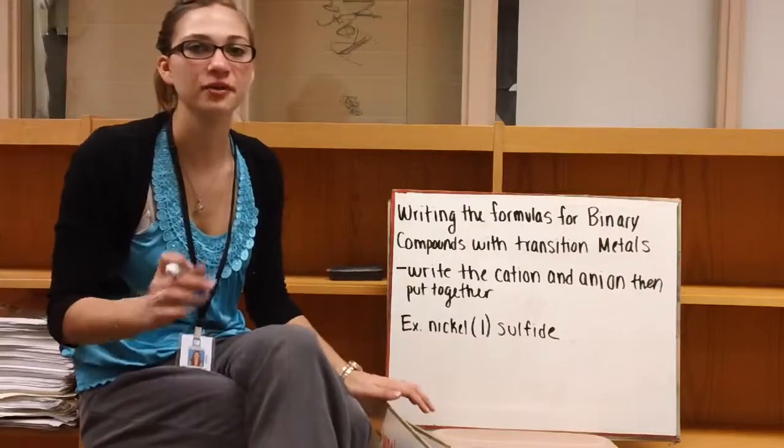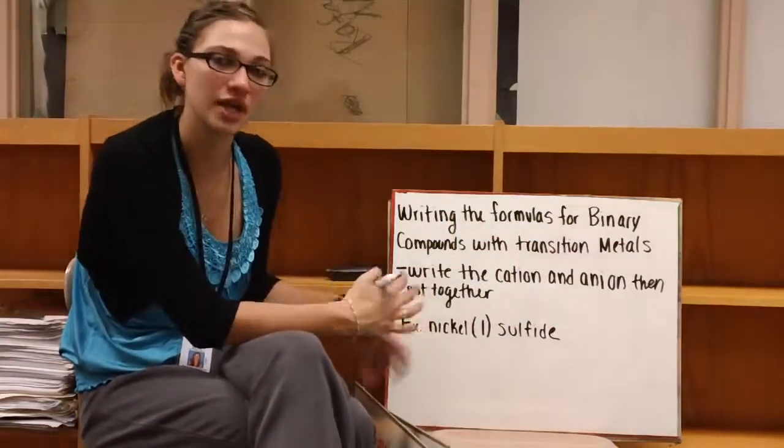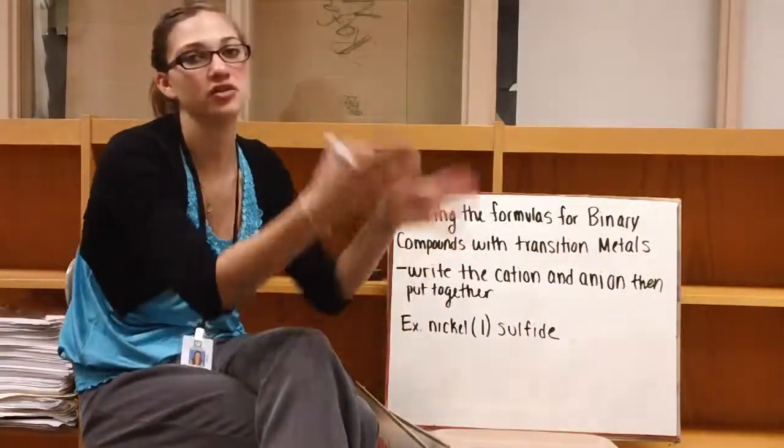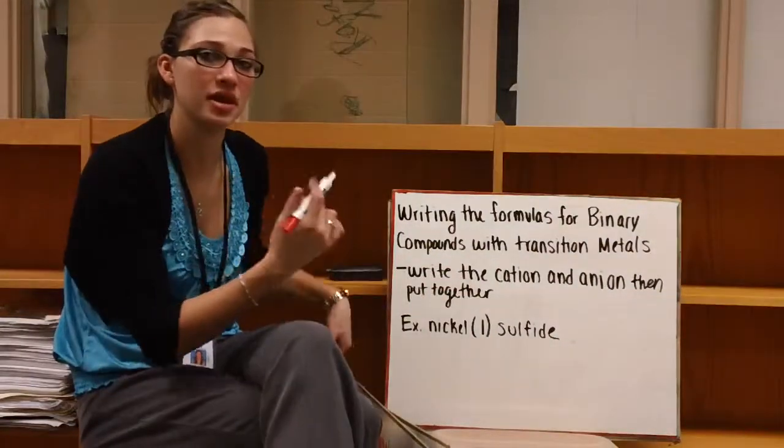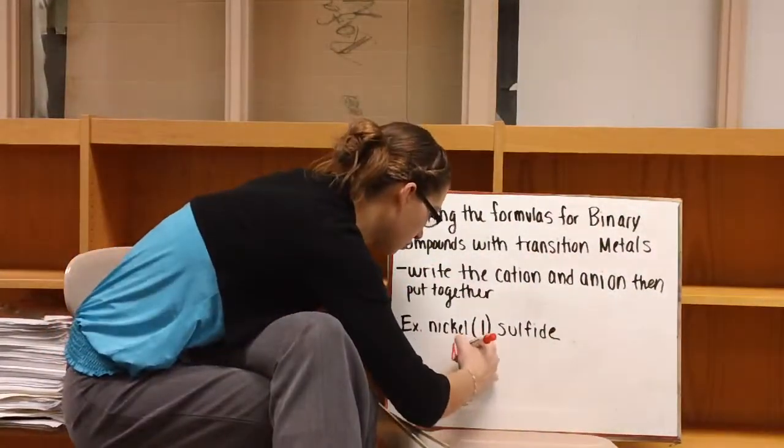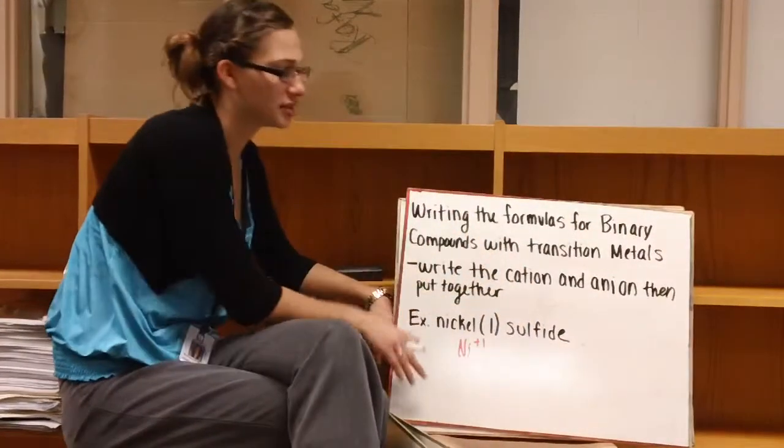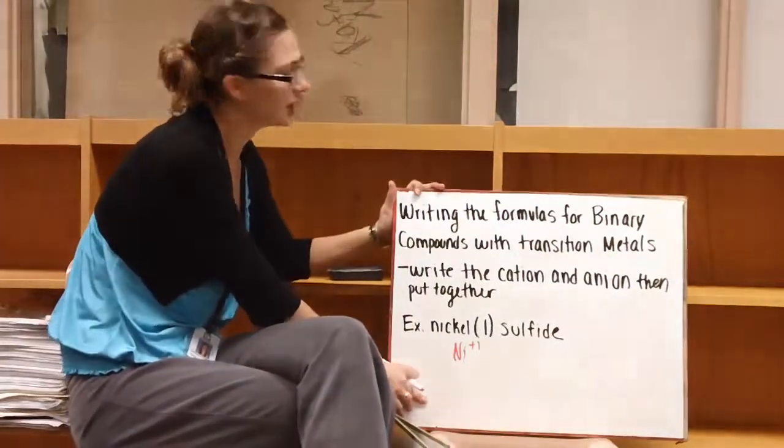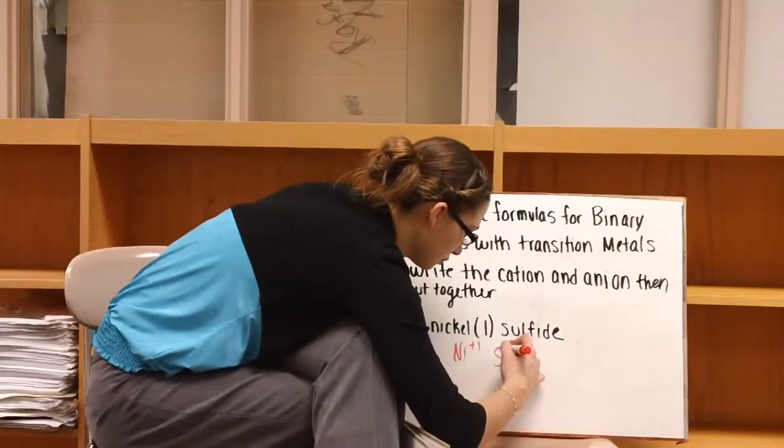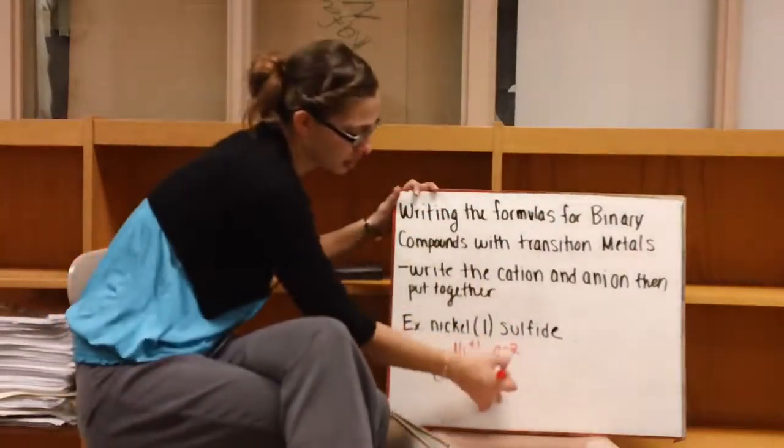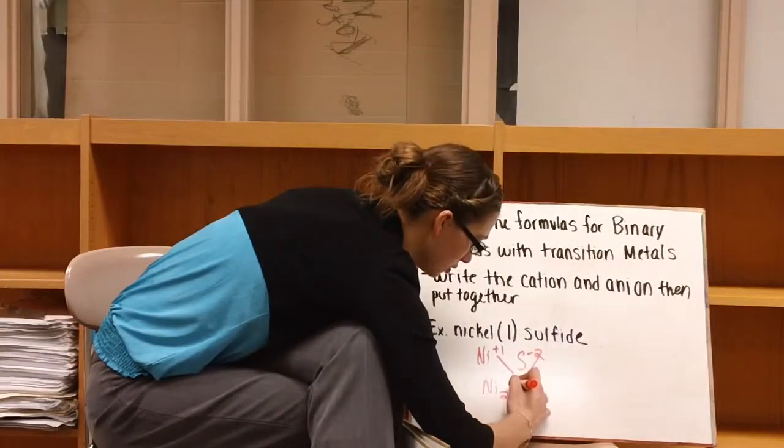All right, so now if we're given the name and we need to write the formula, we just need to go backwards. So what I would do first, until you get used to doing this kind of thing, I would first write the cation and the anion, and then put it together. So here, it says nickel(I), so we know that nickel has a charge of one. And then sulfide, if we look on our periodic table, we would see that sulfide is in the group that has a charge of minus two. So then we would crisscross our charges, and we would get Ni2S.